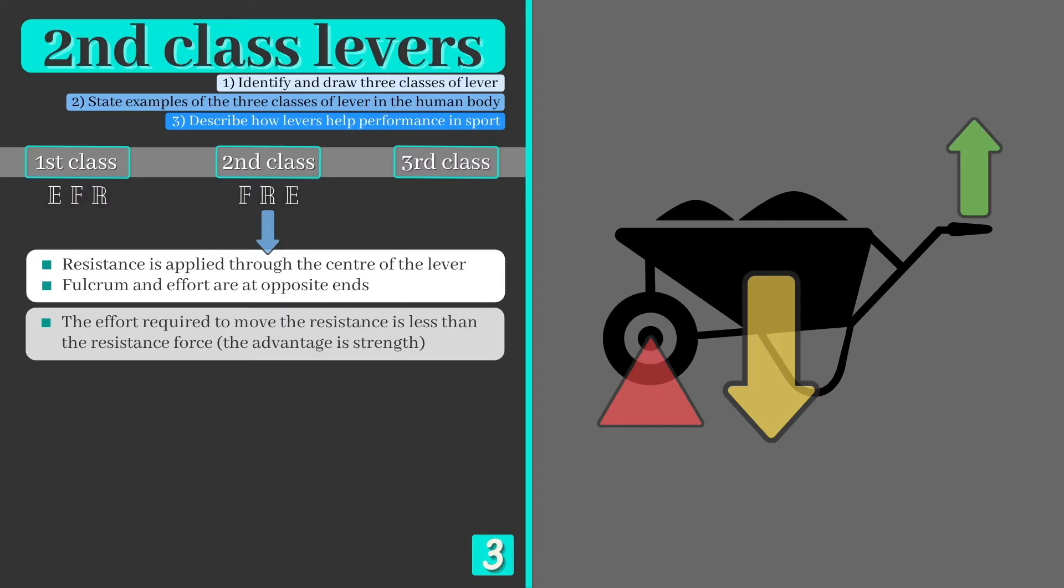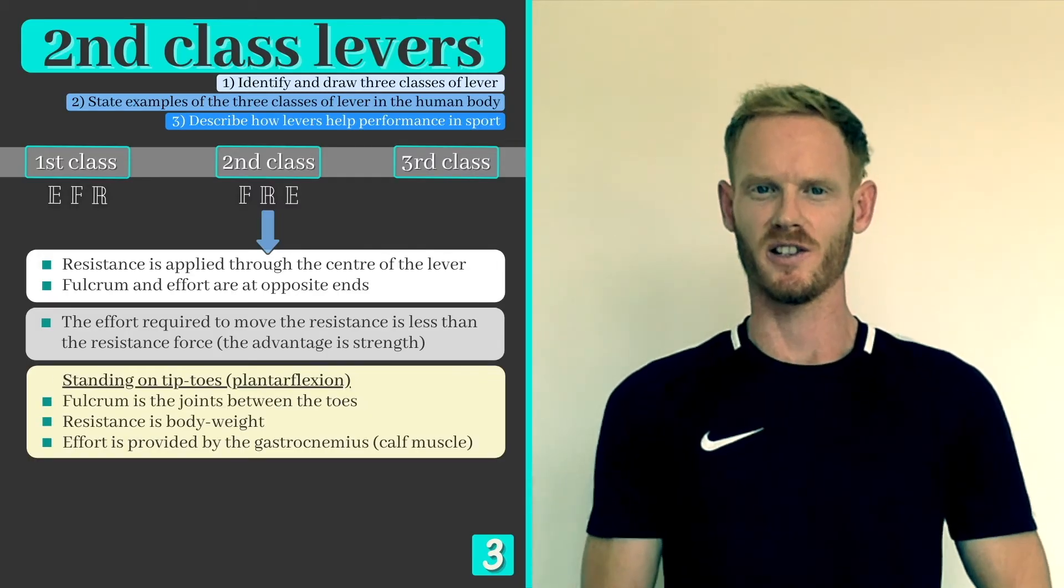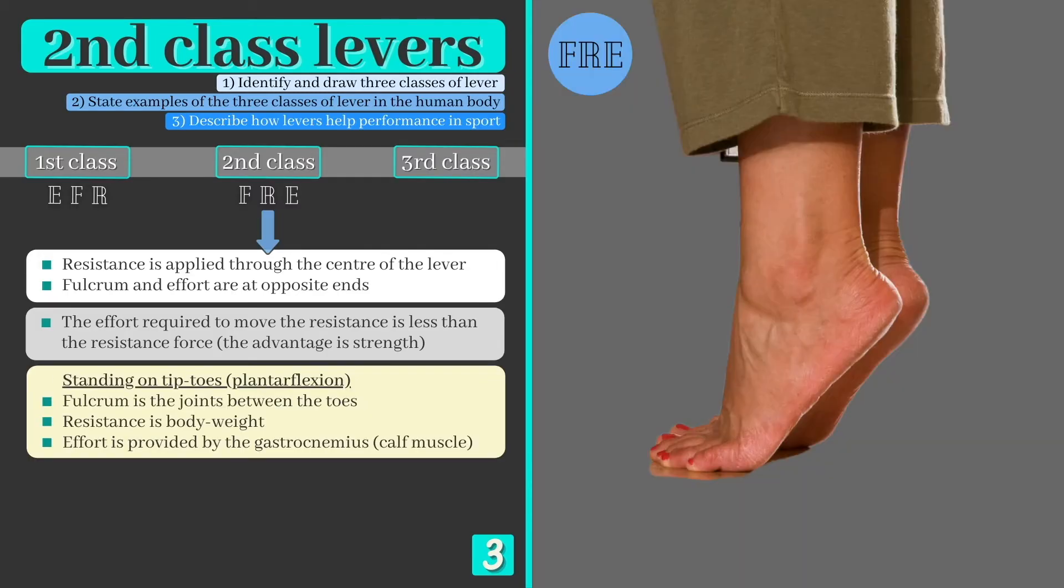This is why you're capable of lifting more in a wheelbarrow than you could with your arms alone. Plantar flexion occurs as we stand on our tiptoes, and this is an example of a second class lever in action. The fulcrum is located at the joints between the toes and the ball of the foot. The weight of the body is the resistance, and the gastrocnemius muscle on the back of the leg provides the effort.